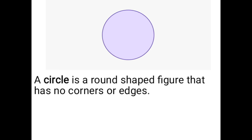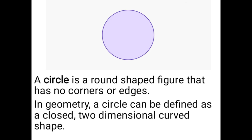Look at an image of a circle. What is called a circle? This is the definition of circle. Students, you have to write this definition in your notebook. A circle is a round shaped figure that has no corners or edges. In geometry, a circle can be defined as a closed two-dimensional curved shape. In a circle, you don't have sides and corners — it is a two-dimensional curved shape.